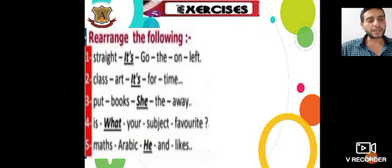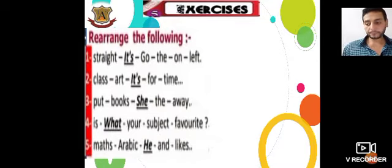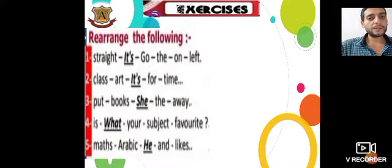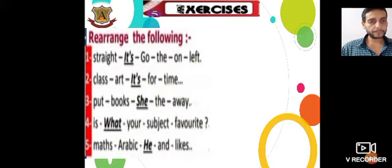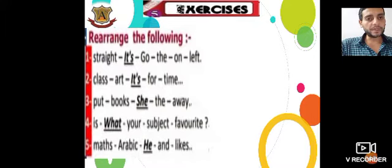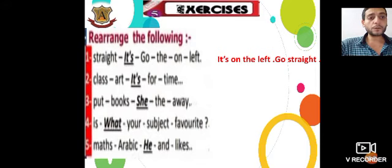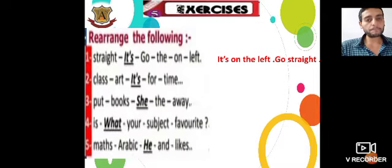Now we need to do some practice. Exercise number one — rearrange the following sentences. Question number one: go, straight, it's, on, left. The answer is: go straight, it's on the left.